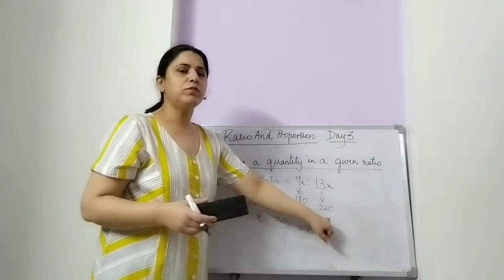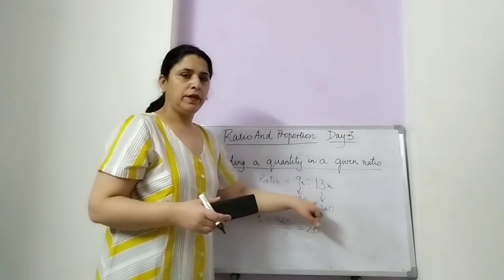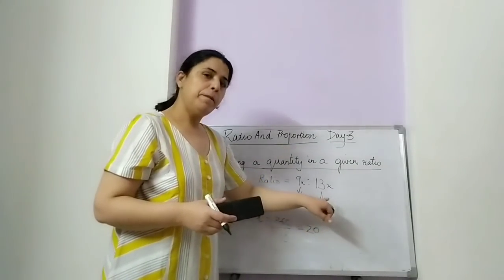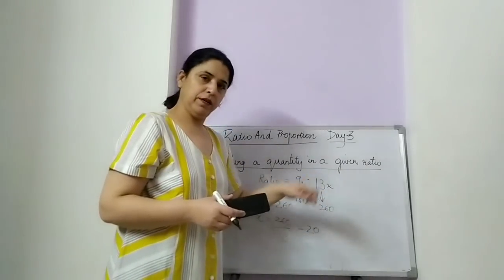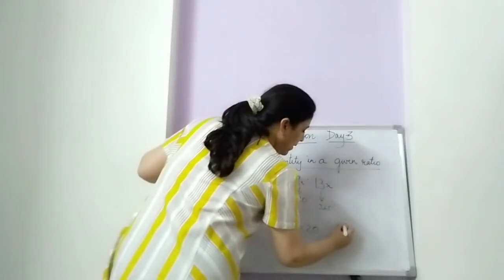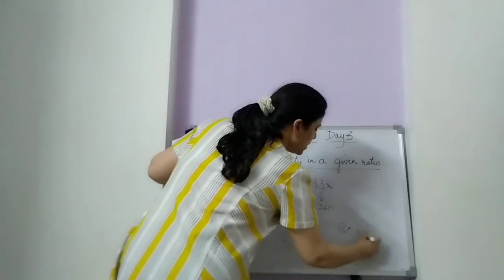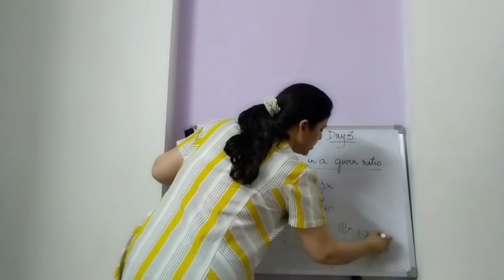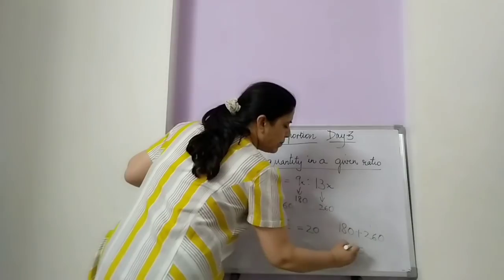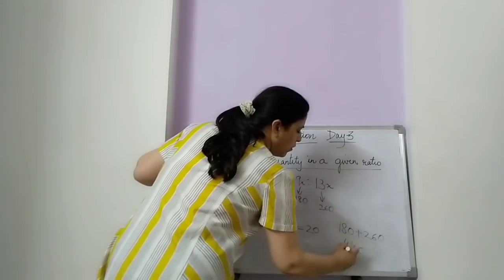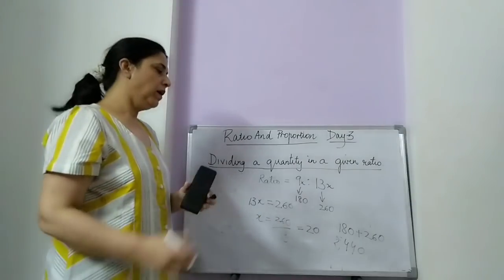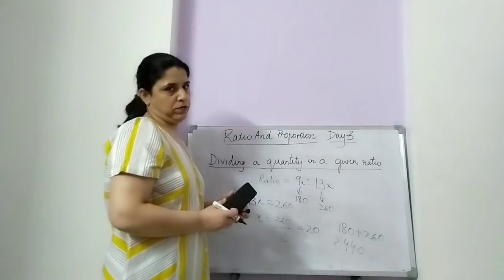So what will be the total amount? The total amount is 180 plus 260. 180 plus 260 is 440 rupees — that is the total amount.